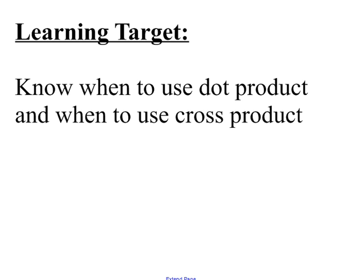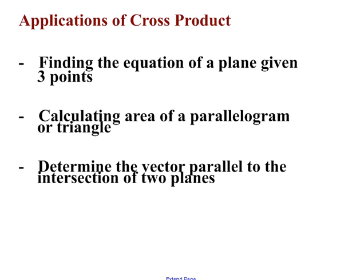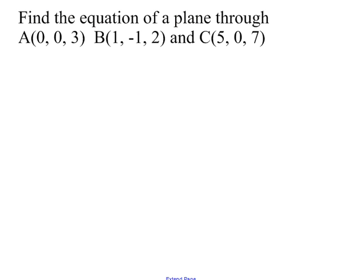Today we're going to look at the cross product and some applications of the cross product — when we use it, and how it's different from when we use the dot product. Our applications for cross product are: finding the equation of a plane given three points, calculating the area of a parallelogram or a triangle, and determining the vector parallel to the intersection of two planes.